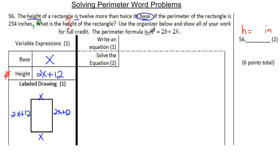Now we're going to write an equation. The perimeter, which we know, is 234, equals 2 times the base. Well, I do know the base. It's X. So, I'll write X. Then, plus 2 times the height. Well, I know the height. The height is 2X plus 12. So, 2X plus 12.